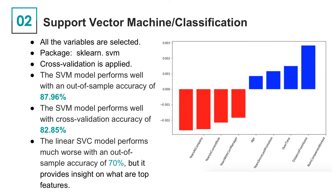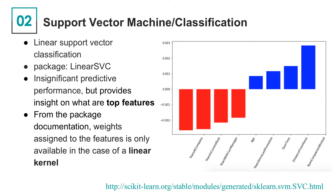Then we apply support vector machine to train the model, using the kernel method. The out-of-sample accuracy rate is 88% and the cross-validation rate is around 83%. The linear SVC model performs much worse with an out-of-sample accuracy of 70%, but it provides insights on the top features. In the SVM with kernel method, data are transformed by the kernel to another space different from the input space; therefore, we get no chance to know the important variables. Linear support vector classification is added to show the weight of each coefficient.